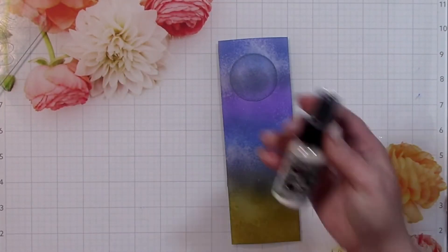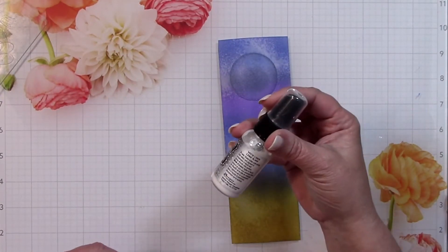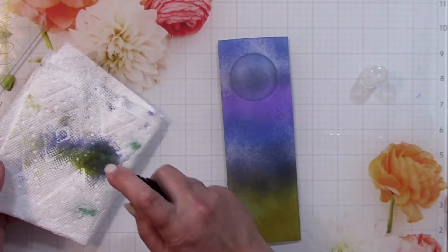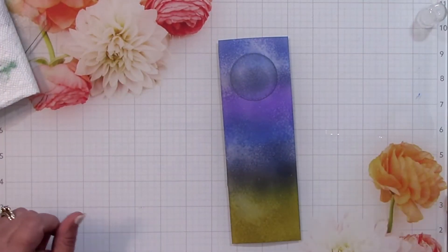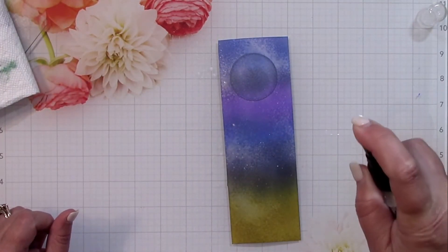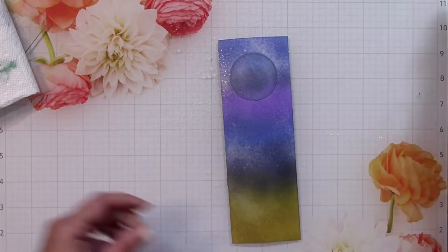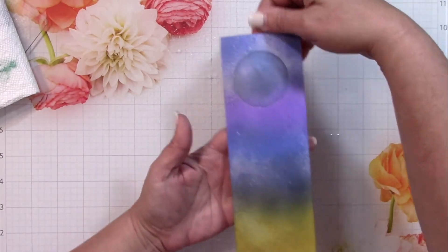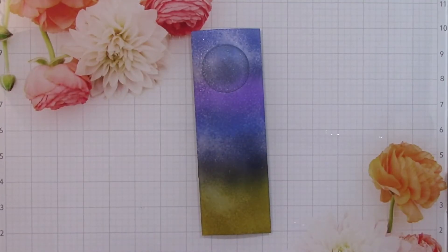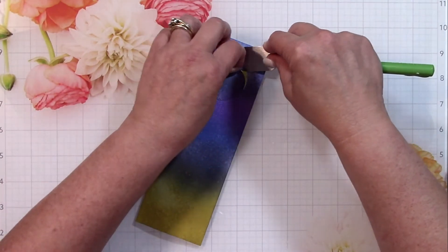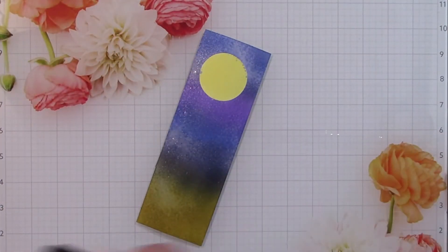To add some shimmer and some additional white to the background, I'm going to spray on some Dylusions White Linen spray. You can see I'm going to be pretty liberal with it and it gets a little bit heavier in certain areas, but that is just perfect for me. That's going to give us a little bit more shimmer and light.